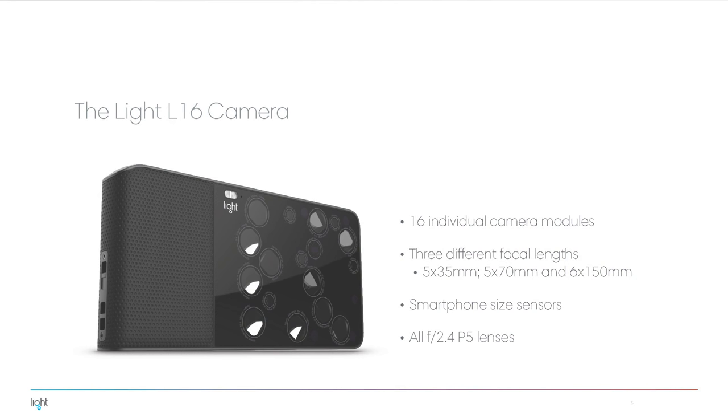This is what the camera actually looks like — the first camera we just announced. It has 16 individual camera modules at three different focal lengths: five modules at 35mm equivalent focal length, five at 70mm equivalent, and six at 150mm equivalent. They use smartphone-size sensors and are all F2.4 five-element lenses using only plastic lenses. This camera is based on the supply chain for mobile devices, not traditional camera devices, so we can leverage all the volume and cost advantages that supply chain gives us.